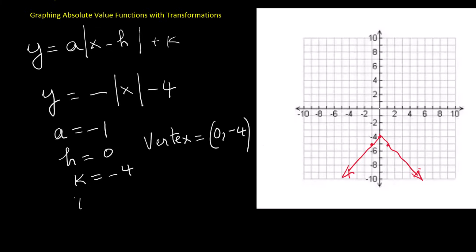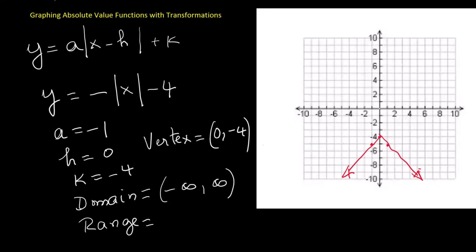The domain is all real numbers, written in interval form as open parenthesis negative infinity comma positive infinity close parenthesis. The range includes all values less than or equal to negative 4, written in interval form as open parenthesis negative infinity comma negative 4 with a closed bracket.